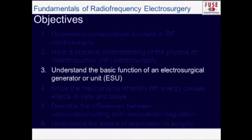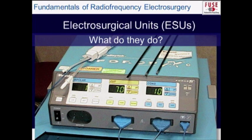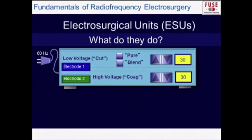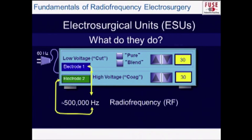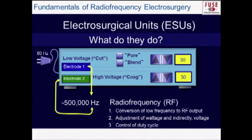Electrosurgical generators take the 60 Hz, 60-cycle-per-second alternating current from the wall and convert it to one that's 500,000 cycles per second — or approximately 500 kHz. That's why it's called radiofrequency: 570 on the AM dial corresponds to 570 kHz. Generators also allow you to adjust voltage and wattage, control the duty cycle, and more advanced devices go even further.